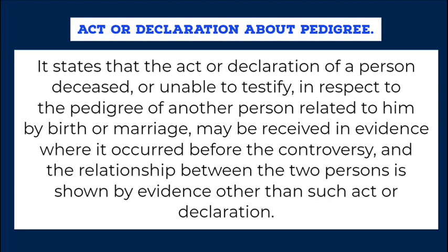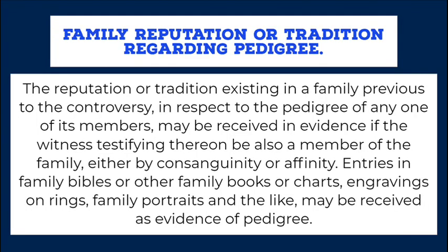Act or Declaration About Pedigree. It states that the act or declaration of a person deceased or unable to testify, in respect to the pedigree of another person related to him by birth or marriage, may be received in evidence where it occurred before the controversy, and the relationship between the two persons is shown by evidence other than such act or declaration. Family Reputation or Tradition Regarding Pedigree. The reputation or tradition existing in a family previous to the controversy, in respect to the pedigree of any one of its members, may be received in evidence if the witness testifying thereon be also a member of the family, either by consanguinity or affinity. Entries in family Bibles or other family books or charts, engravings on rings, family portraits and the like, may be received as evidence of pedigree.